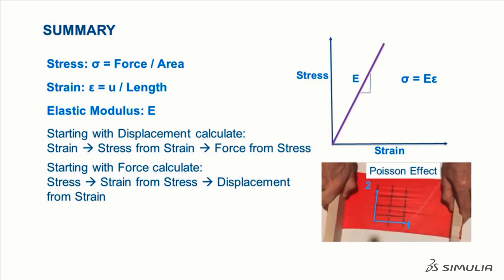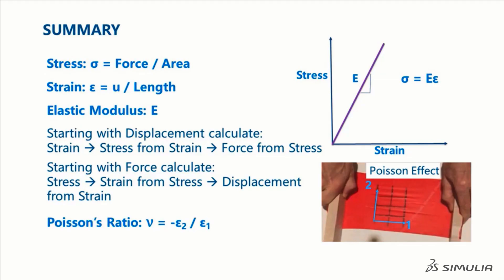We introduced the phenomenon called the Poisson effect, and we defined Poisson's ratio as the strain in the transverse direction divided by the strain in the direction that we apply the displacement.